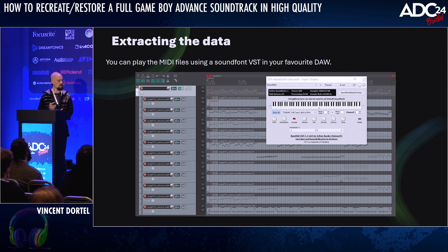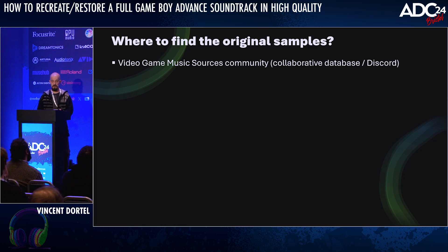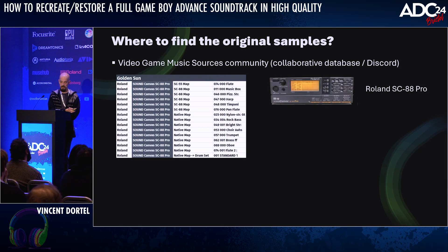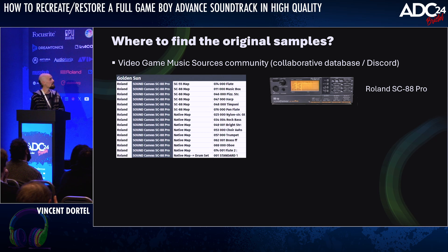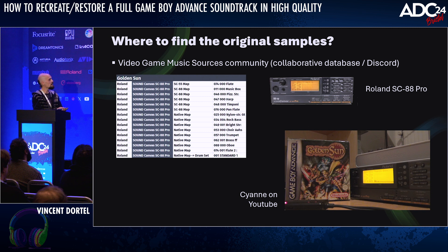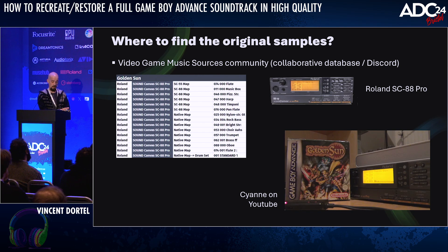What we need to do next is to restore the samples themselves. The first thing to do is to check the video game music sources community — it's an amazing and dedicated community. All their findings are publicly available online, and they also have a Discord server. When I started my journey, I found a listing for the first Golden Sun game which said that all the instruments came from a Roland SC-88 Pro device. I was inspired by someone called Cyan on YouTube — she extracted the MIDI files, patched them, and played them directly on the device using its MIDI input. But then I discovered that some sounds didn't come from that device at all, so it motivated me to push the concept further.